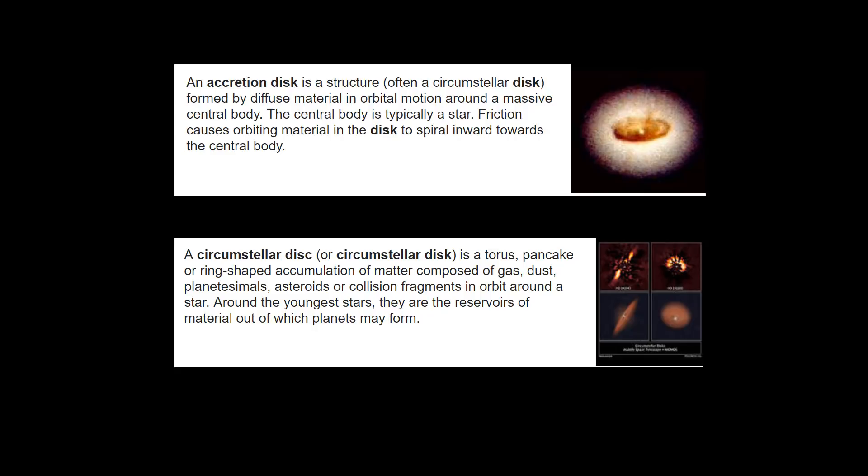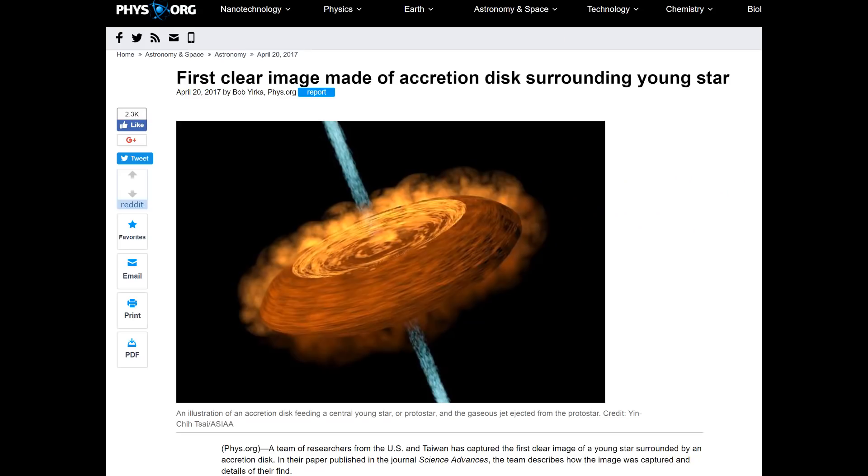So now we can have a look at one. And if you ever seen a torus, it looks like this. And this is the first clear image of an accretion disk surrounding a young star in 2017, so you know it's a credible source from Phys.org. Now if you've ever seen a rotating torus, like say in a microwave...